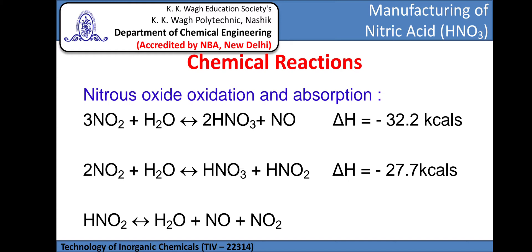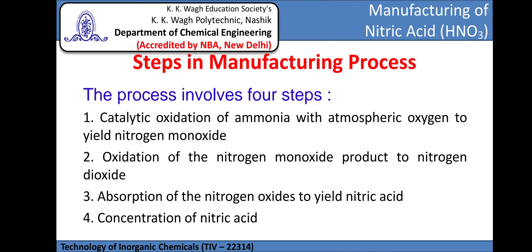The alternative reaction involving absorption is: 2 moles of nitrogen dioxide absorbed in water to produce HNO₃ and HNO₂. The byproduct HNO₂ breaks down into H₂O and NO, and the NO produced is again oxidized to produce nitrogen dioxide as per the earlier reactions.